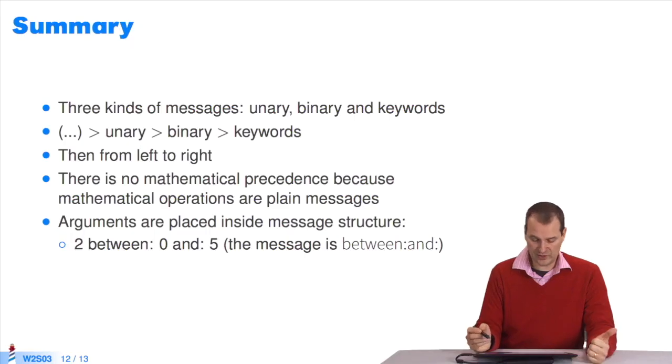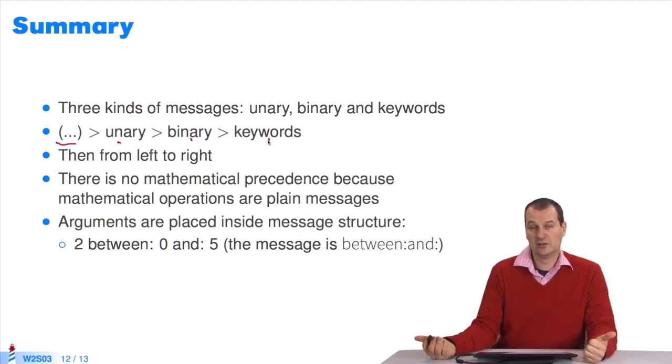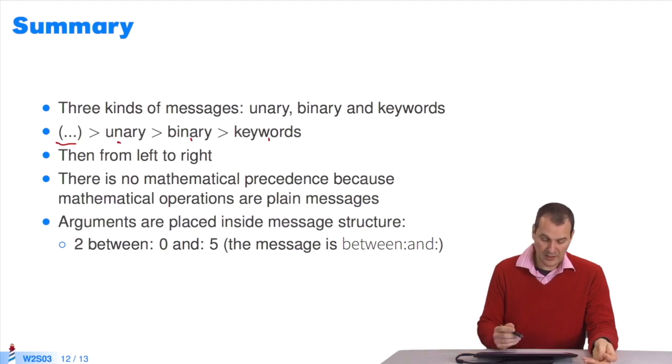To sum up, there are three types of messages which you should know by now: unary, binary, keywords. You first execute parentheses, then unary, binary, and keywords. When at the same level, for instance, with two unary messages, you go from left to right. There's no mathematical precedence, as mathematical operations are plain messages. What's different from most languages? Arguments are placed inside the message structure, between keywords, for instance.